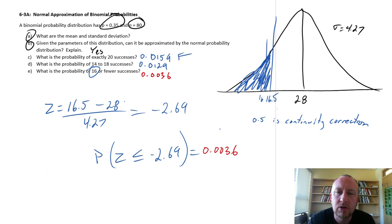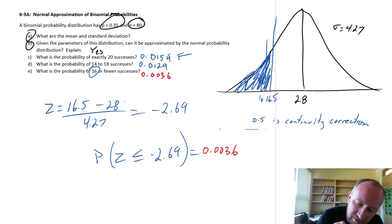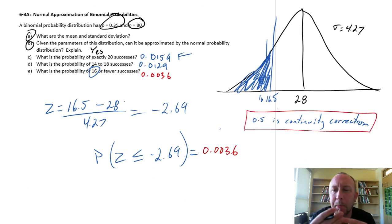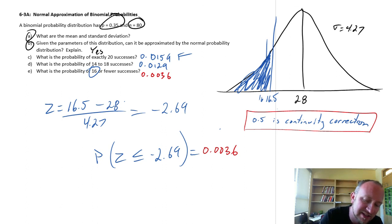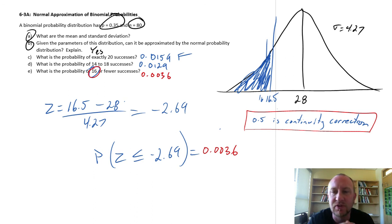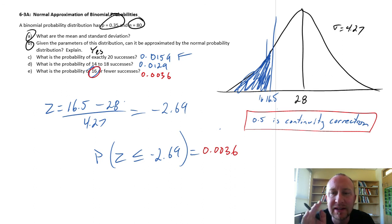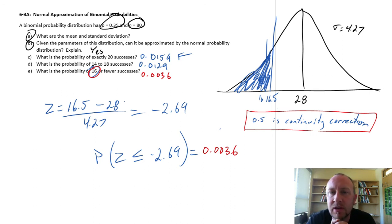The real trick here is remembering to apply the continuity correction factor because we're approximating, and we want to make sure we include our endpoints. It's not fewer than 16 — it's 16 or fewer — so we add that correction to include the probability of that endpoint value 16 also occurring. I hope this was helpful, thank you for watching, bye bye.